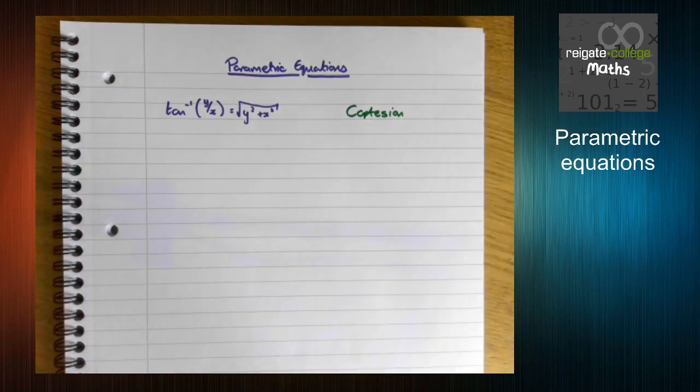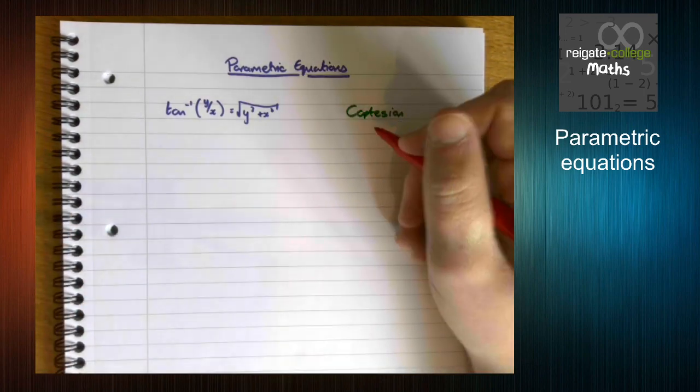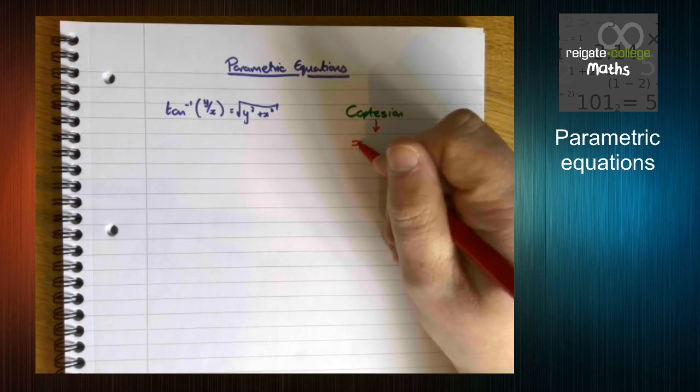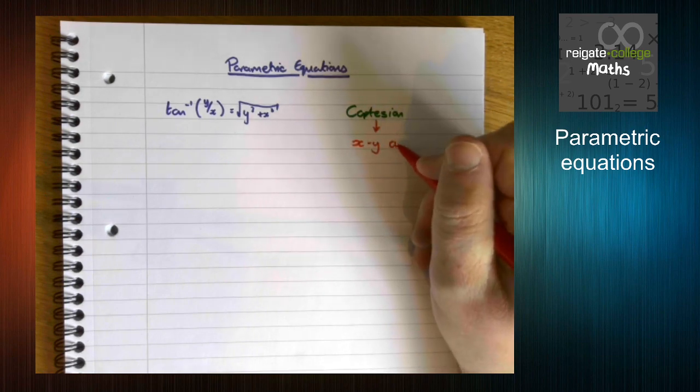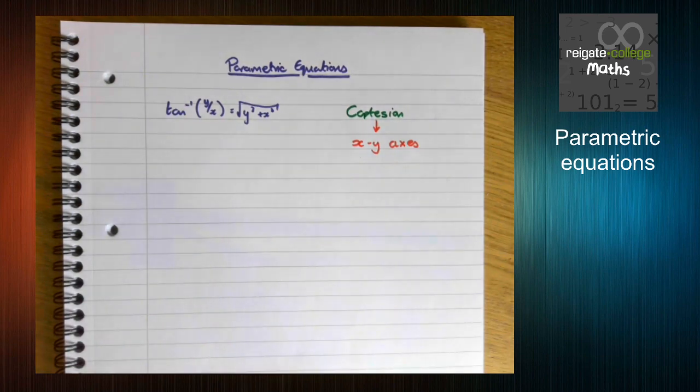Now Cartesian basically just means our x and y coordinates. Named after René Descartes, the French philosopher. This is a way of describing equations. And it's the way you've used so far.